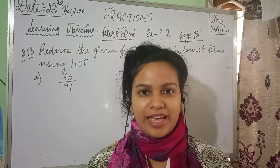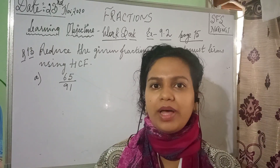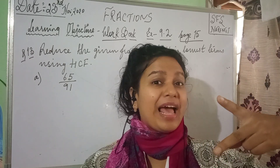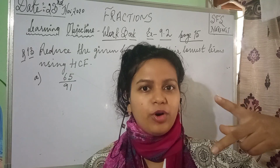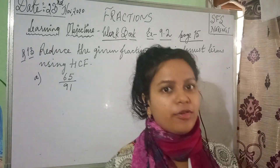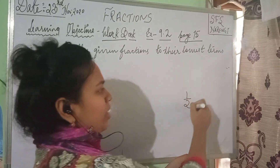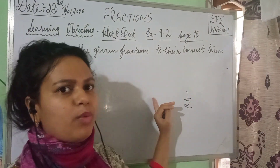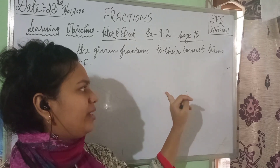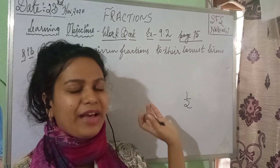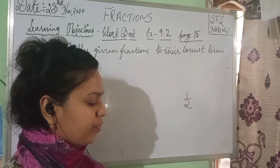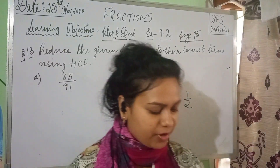When I say a fraction in its lowest form, what do I mean? The numerator and denominator of the fraction will have no common factors besides 1. For example, 1 by 2 — in 1 by 2, the numerator 1 and the denominator 2 have no common factor besides 1, and they cannot be cancelled out or reduced further.